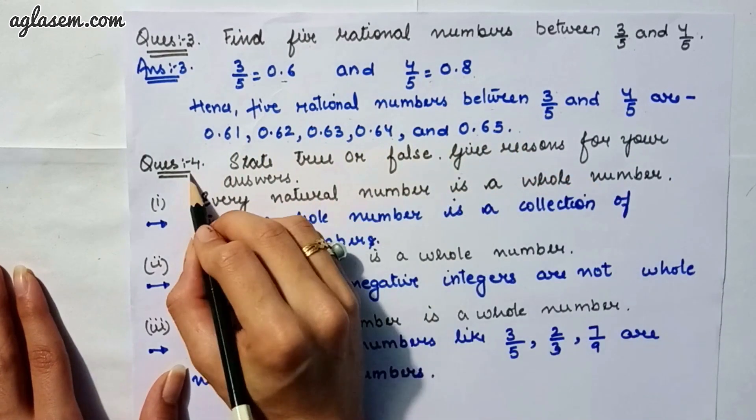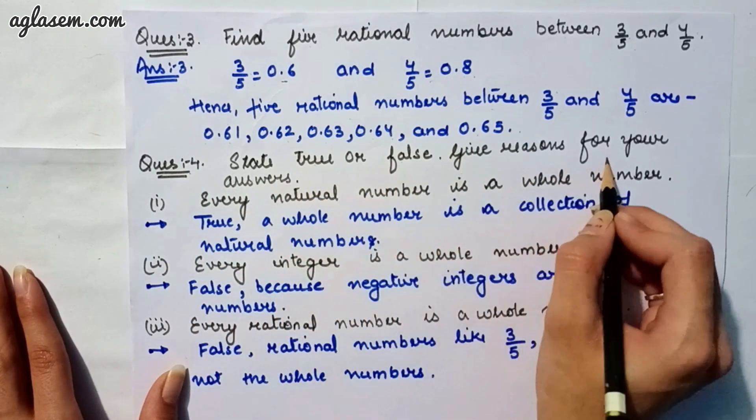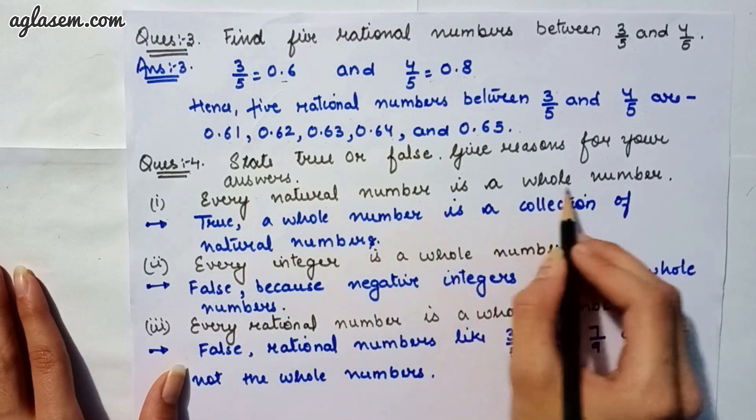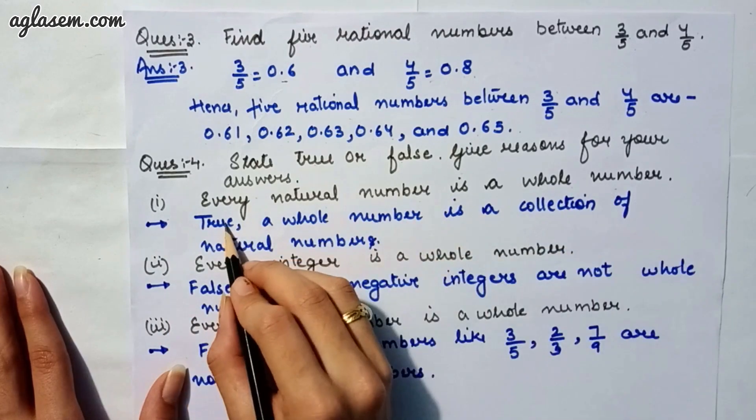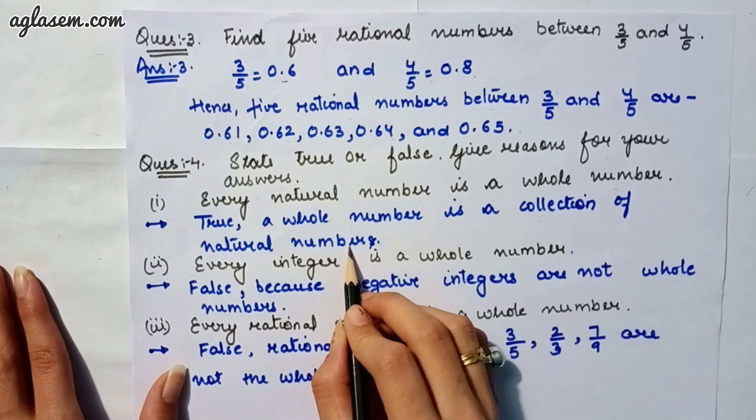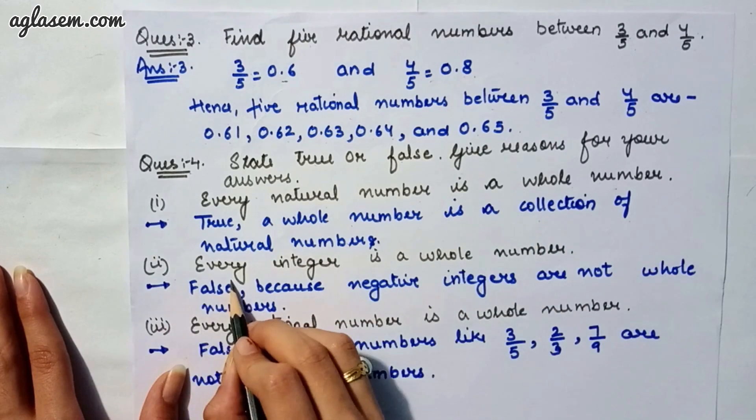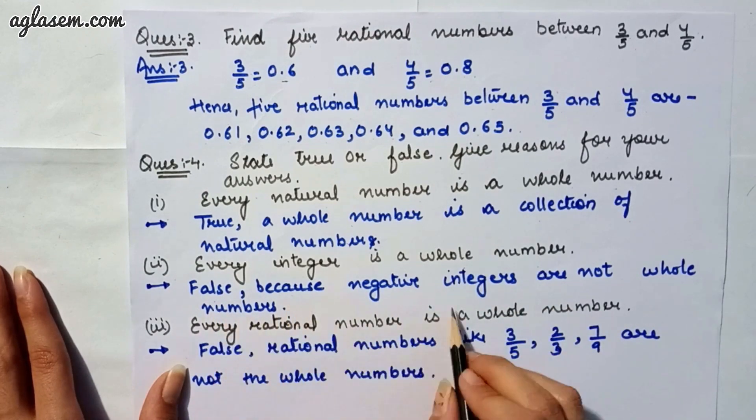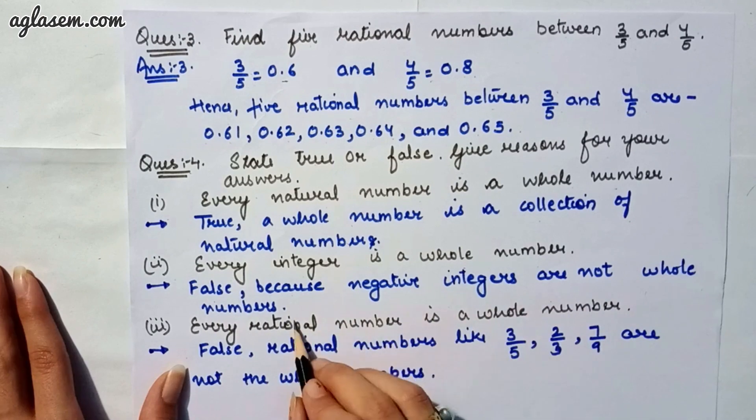Moving to our fourth question which says, state true or false and give reasons for your answer. Part 1 says, every natural number is a whole number. So, it is true, a whole number is a collection of natural numbers. Moving to our second part which says, every integer is a whole number. That is false because negative integers are not whole numbers.